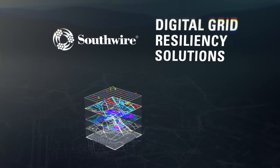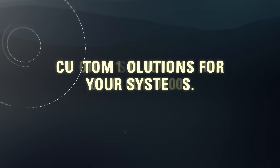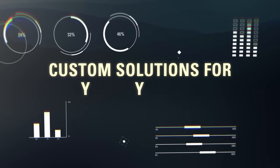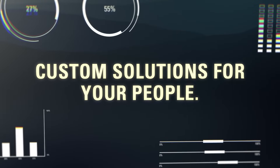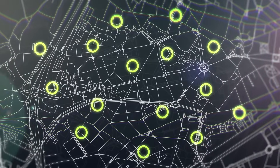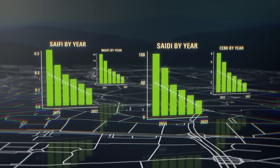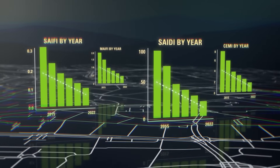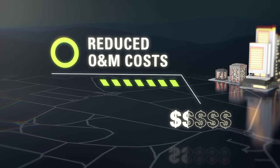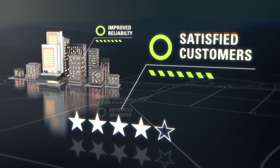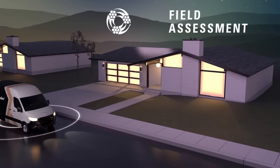Using Southwire's Digital Grid Resiliency Solutions, we'll help customize solutions for your systems, your data, and your people. Our utility partners see improvements in their grid resiliency and their reliability indices. Reliability improves, which lowers O&M costs, ultimately improving customer satisfaction.